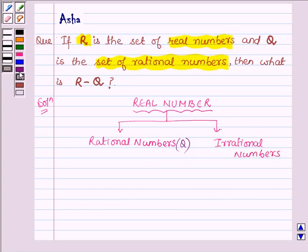And rational numbers are the numbers of the form P upon Q where P and Q are integers and Q is not equal to 0.